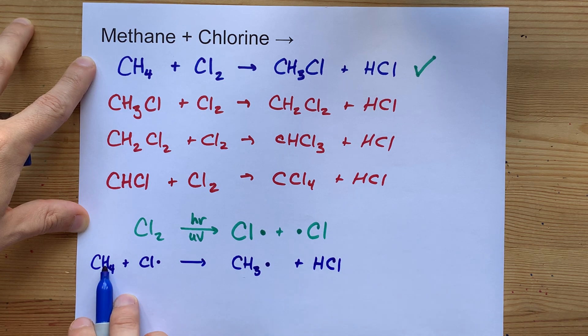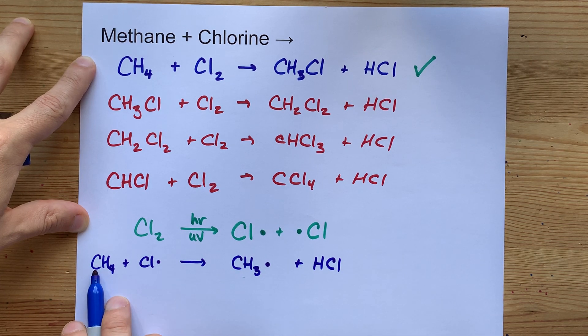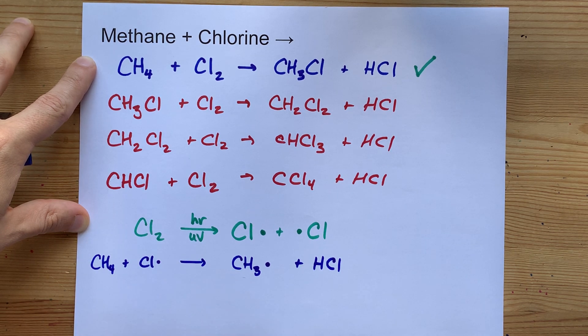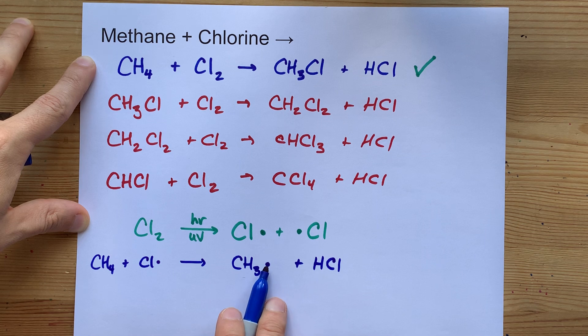Because again, the hydrogen that was bonded to the carbon brought an electron with it to pair up with that one. Now there's an unpaired electron there.